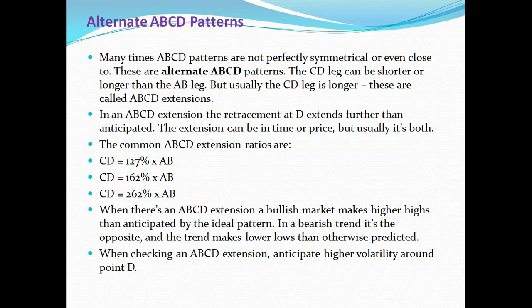Many times ABCD patterns are not perfectly symmetrical — these are called alternate ABCD patterns. The CD leg can be shorter or longer than AB, but usually CD is longer. These are called ABCD extensions. In an ABCD extension, the retracement at D extends further than anticipated — the extension can be in time or price, but usually both. The common ABCD extension ratios are: CD equal to 127% of AB, CD equal to 162% of AB, and CD equal to 262% of AB. In a bullish ABCD extension, the market makes a higher high than anticipated; in a bearish trend it makes lower lows. Anticipate higher volatility around point D.